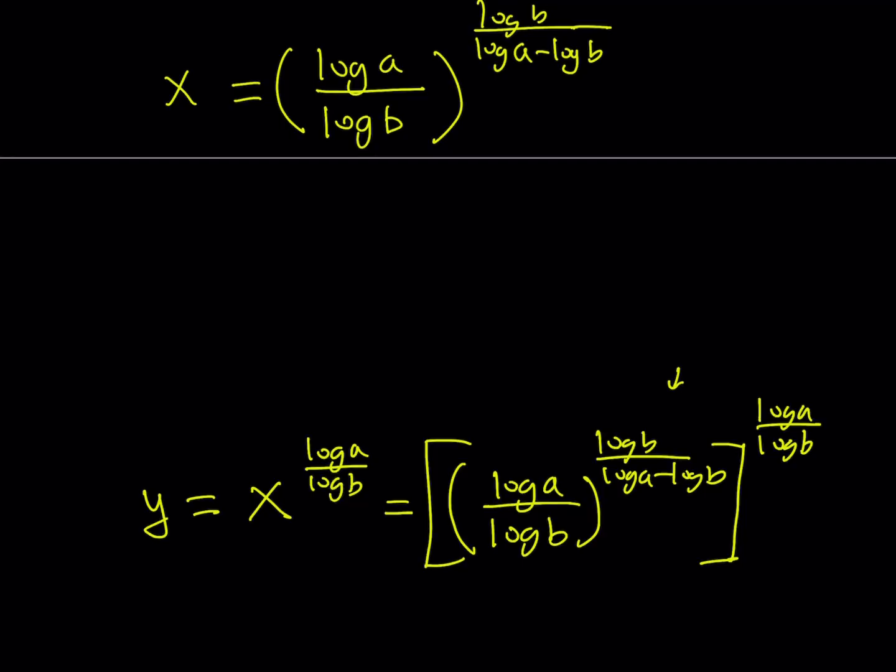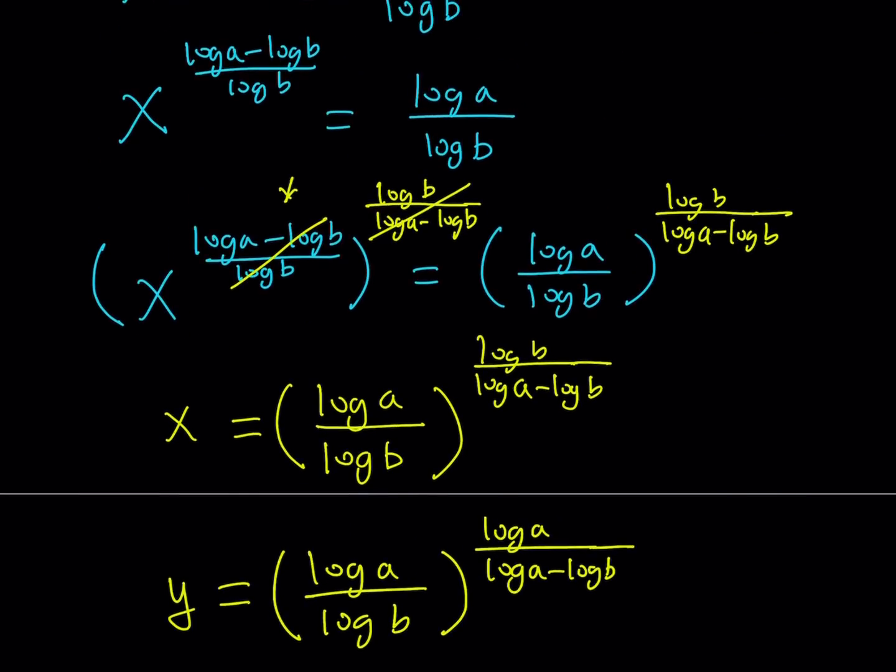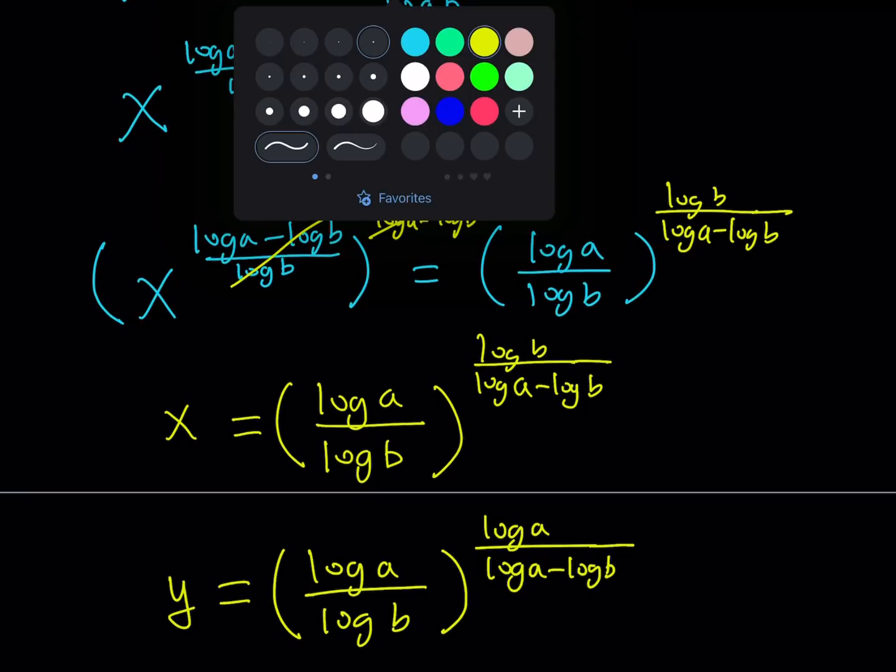Now, these two exponents, this one and this one, they're going to be multiplied, right? So, when we multiply those two exponents, the log b is going to cancel out. And that's going to leave a log a in the exponent. So, we can write the y as pretty much the same base, log a over log b, but the exponent will be different, of course. Instead of log b, here we have a log b for x. It's going to be log a. They're very similar because they're related, of course, in different ways. And, here we go. This is going to be our solutions as an ordered pair.